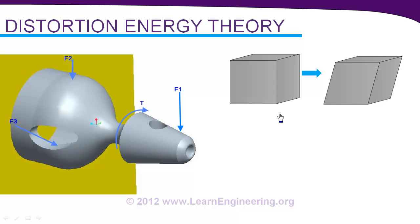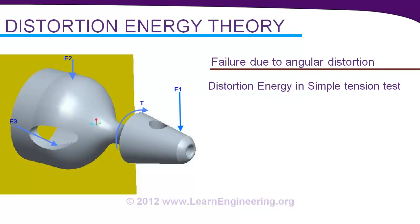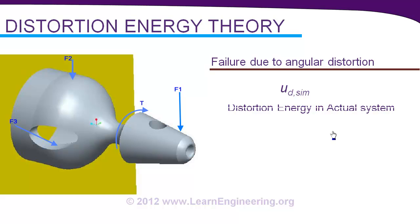So we have two cases of distortion energy. First is distortion energy in a simple tension test at the time of failure. And second is distortion energy in an actual system. For this case this energy is per unit volume so that volume of material doesn't come in picture. And we'll denote these energies using this notation.